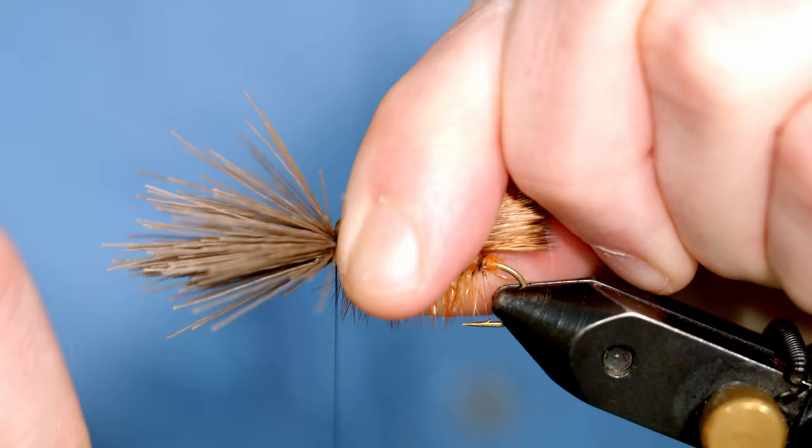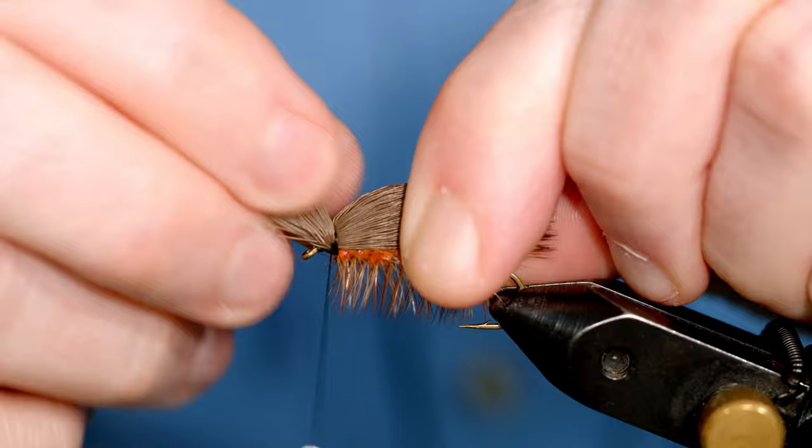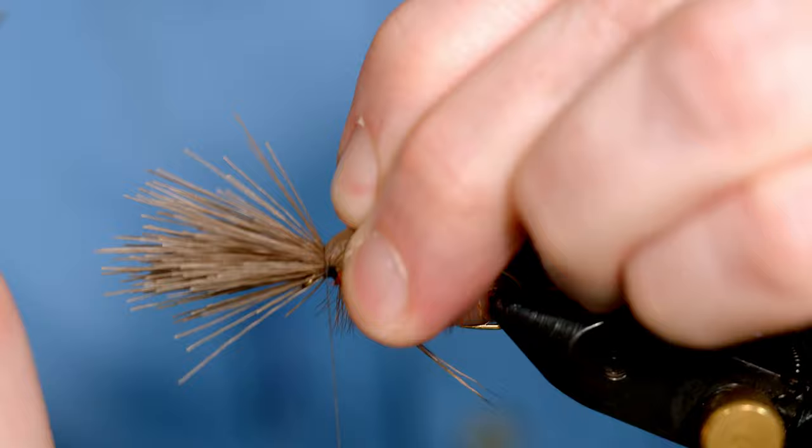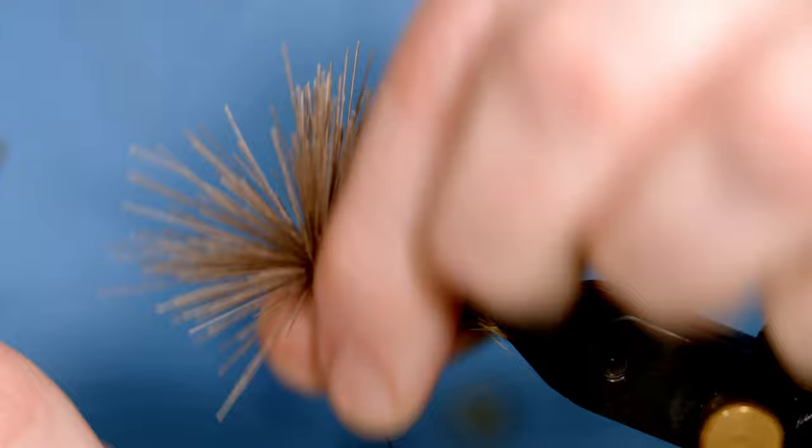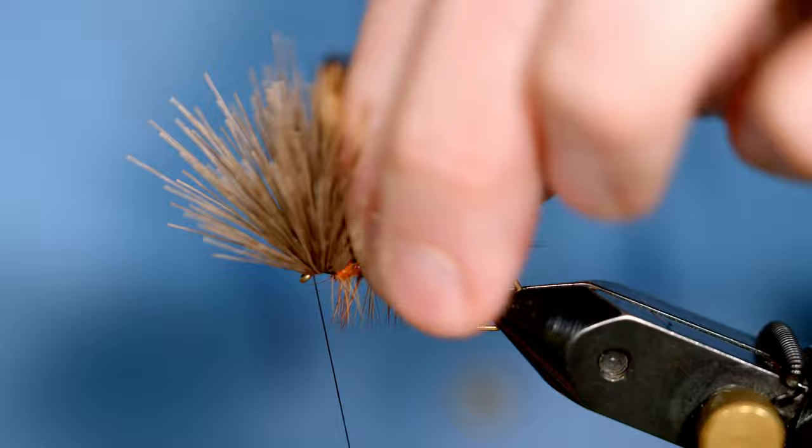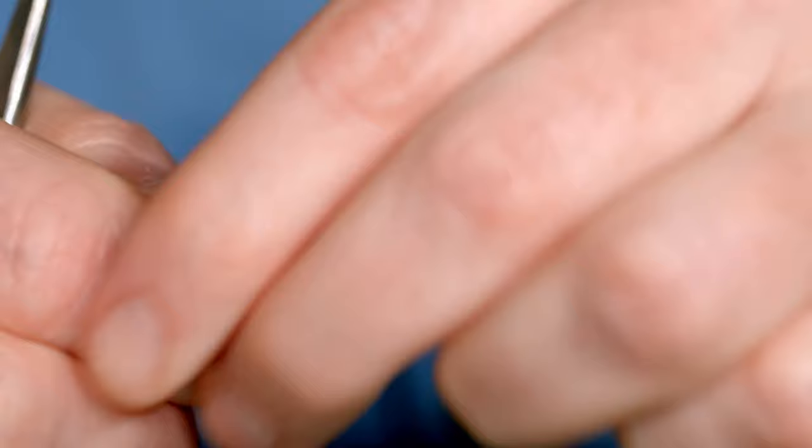Now this is a good chunk of hair so it's going to take a lot of wraps. What I like to do is take about a third of it and go in between that and wrap that and then take another third. What this is doing is making sure it doesn't twist around the hook. Because if it's this much hair, it will just go right around the hook if you don't secure that tightly.